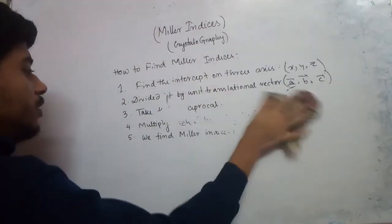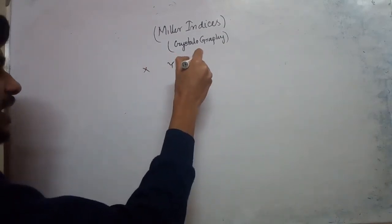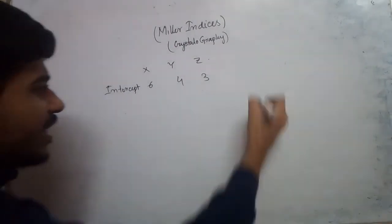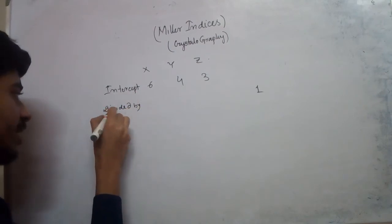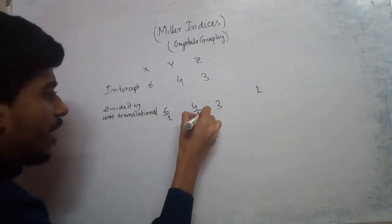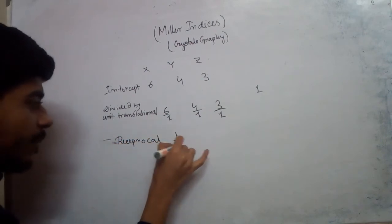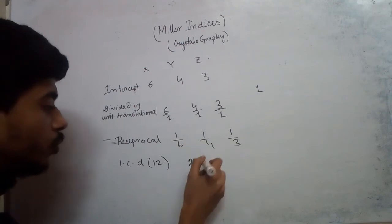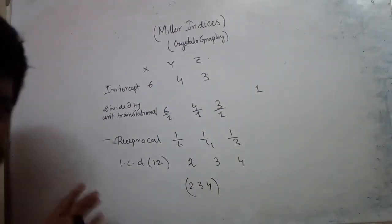For example, suppose we have intercepts on x, y, z of 6, 4, and 3. The unit translational vector is 1, so dividing gives 6, 4, 3. Taking their reciprocals: 1/6, 1/4, 1/3. The least common denominator is 12, giving us 2, 3, 4. So (2 3 4) are the Miller indices. The procedure is simple and clear.